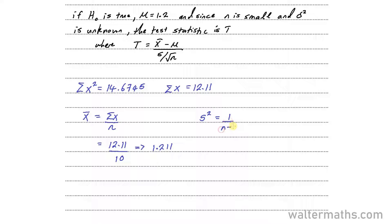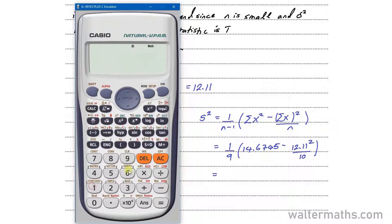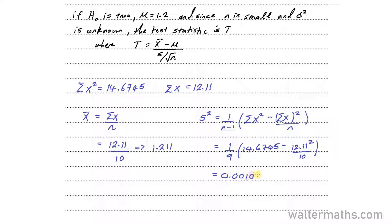And then for the unbiased estimate s², we find it by 1/(n-1) of (sum of squares - (sum of x)²/n). This in our case, since n is 10, will be 1/9 of 14.6745 minus 12.11²/10. I'll go back to original mode. That's 1/9 of 14.6745 minus 12.11 squared over 10, and we are going to get 0.001032. This is the unbiased estimate s².